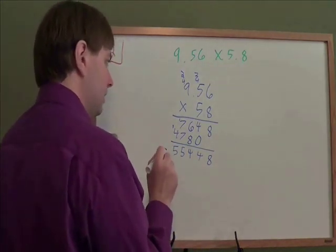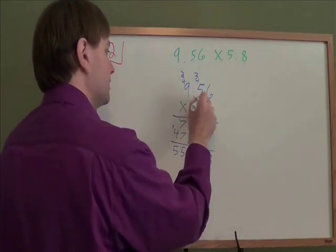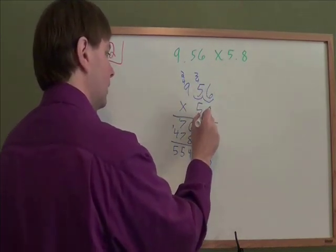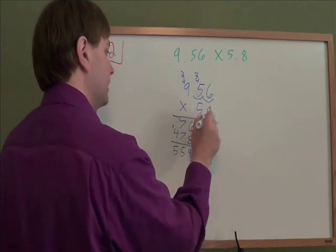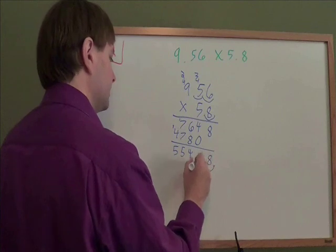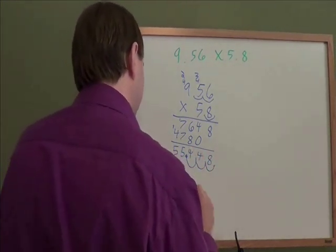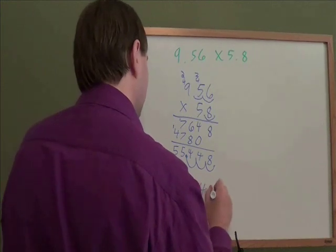And now we do the decimal part. For this, we need to count up how many decimal places we had in the starting two pieces. 9.56 had two decimal places, 5.8 had one decimal place for a total of three decimal places. That just means that our answer needs three decimal places. Our answer is 55.448.